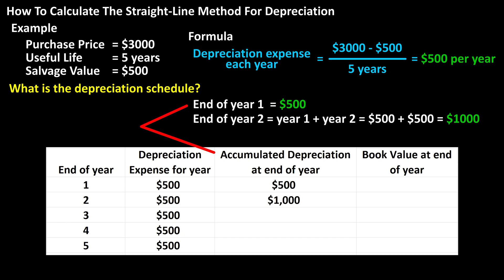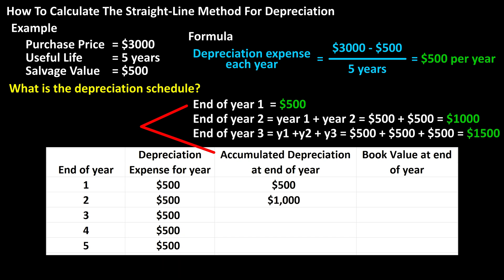At the end of year 3, the accumulated depreciation will be the depreciation for year 1 plus year 2 plus year 3, so $500 plus $500 plus $500, which is $1,500. At the end of year 4, it will be $2,000. And after year 5, it will be $2,500.